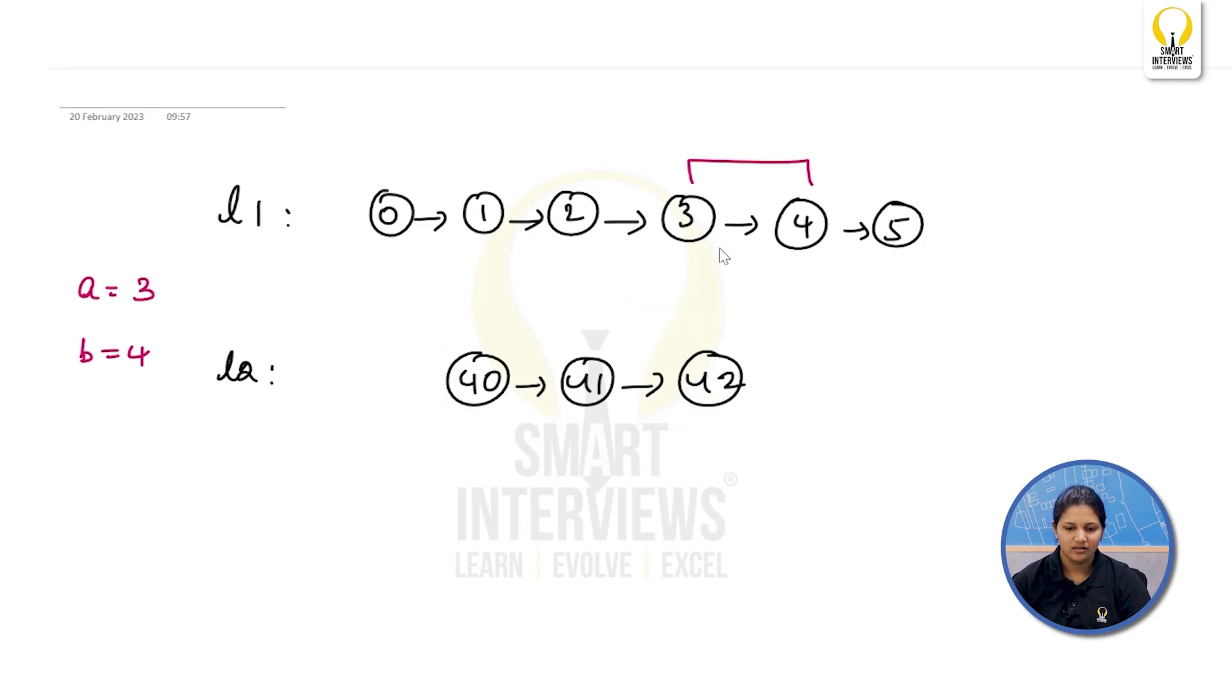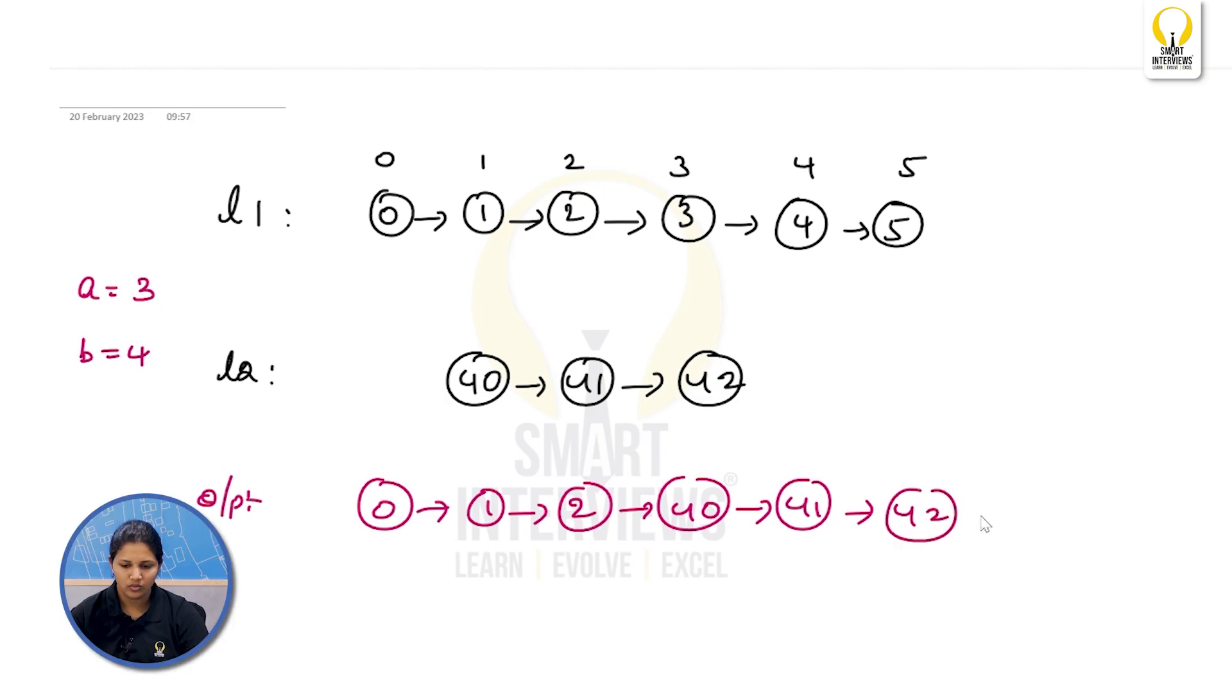Now, let me give numbering for this to make it much better. This is 0, 1, 2, 3, 4 and 5. According to the question, if you remove these two nodes and insert this list here, this will be your output. So you will have 0, 1 and 2. You have to remove this 3 from here and insert your 40 over here. That means you have 40 attached here, followed by 41, 42 and 5. So this will be your output.